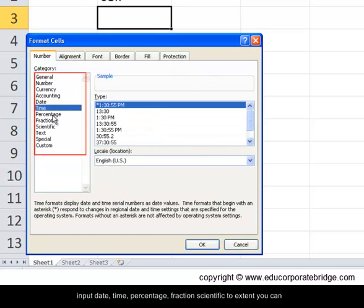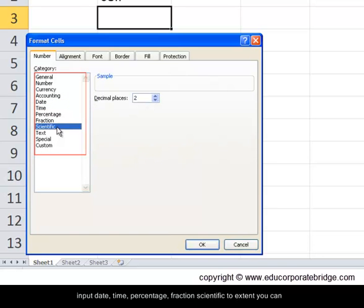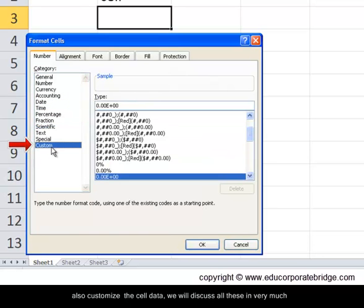You can also input date and time, percentage, fractions, scientific, and to an extent you can also customize the cell data. We will discuss all these in much detail later, but you must understand that a cell can contain different kinds of data. The data can be text, numbered, currency, accounting, date, time, etc.